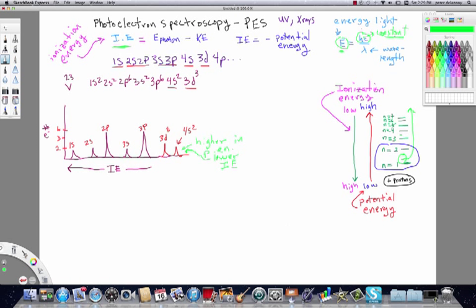These are, these we say are lower in energy, so it actually takes more ionization energy to ionize one of these 3D electrons than it does the 4S2 electrons that are in the 4S subshell.